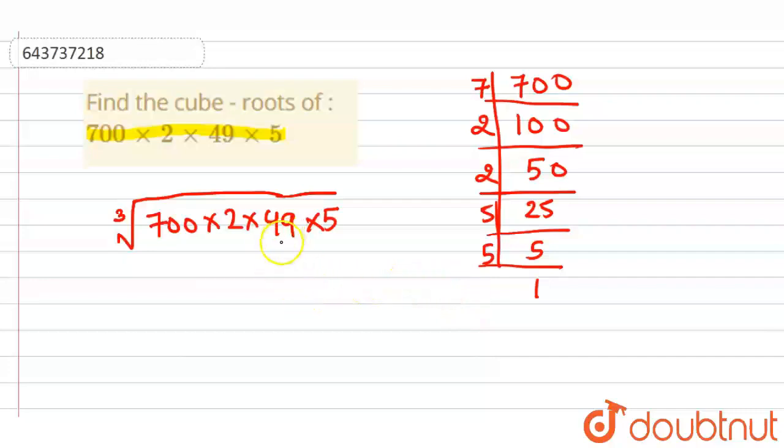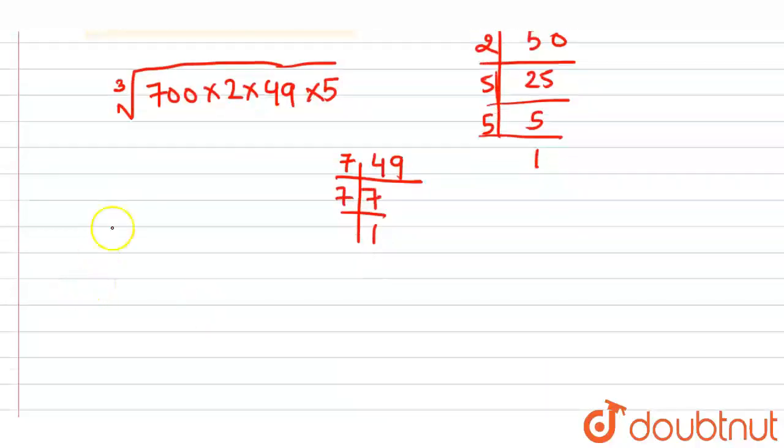Now next comes 49, so 49 could be factorized as 7 and 7. So now this whole term is reduced to the cube root of - 700 is